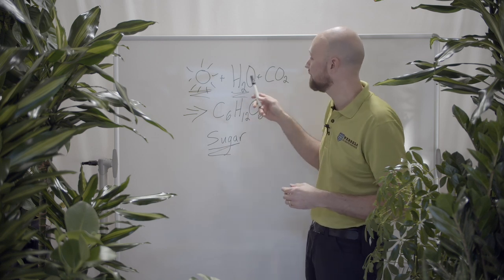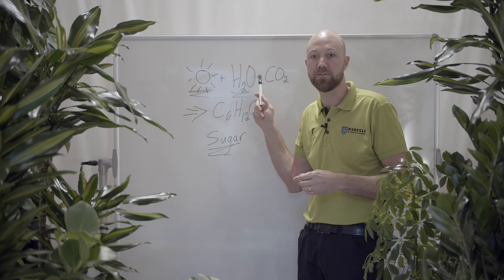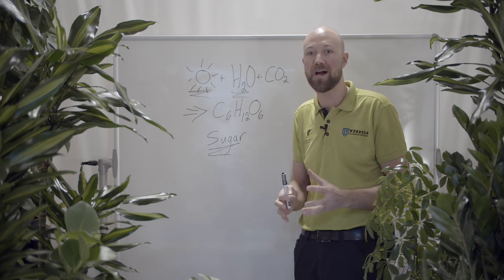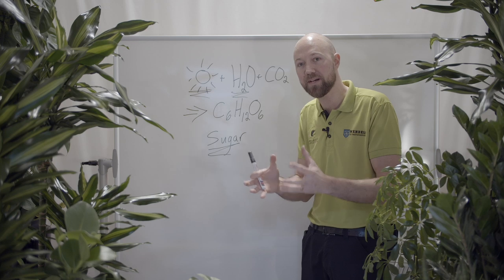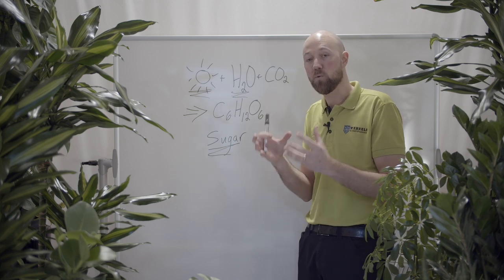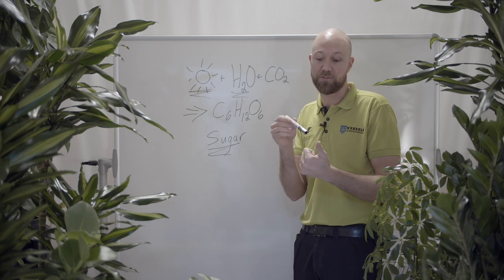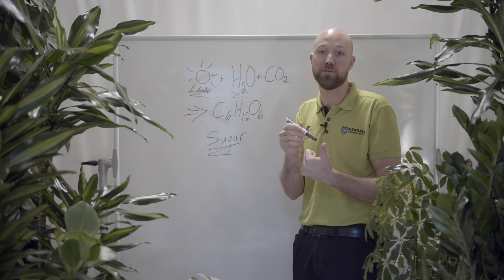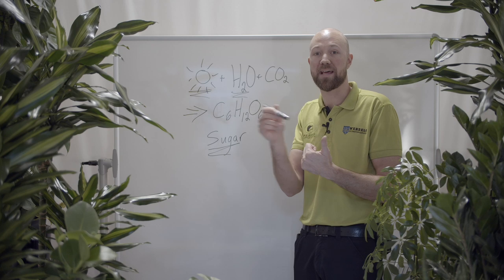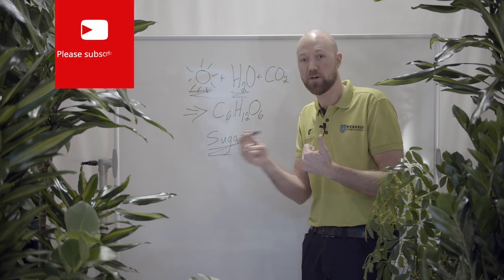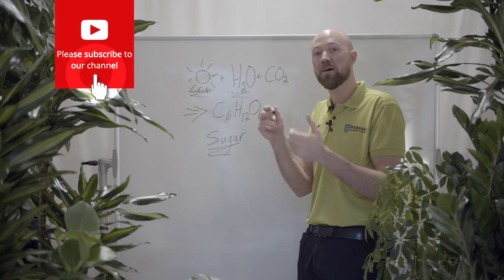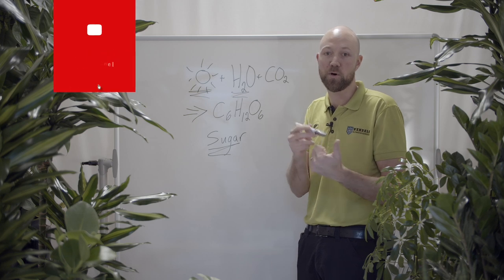But what we can do is make sure that the plant has sufficient amount of water. It always has a way to get the water. One way is to put your plant in a self-watering system, where it always has access to water. Not too much water, not too little water, but the perfect amount of water. That is one way.